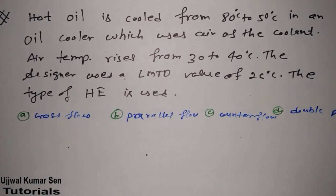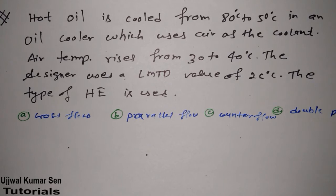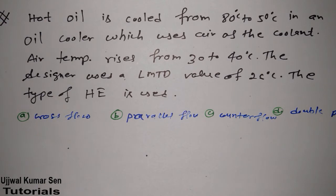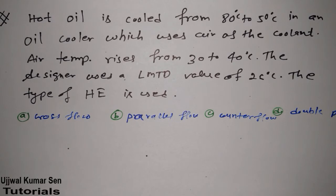We have to find out which type of heat exchanger is being used. You probably came to watch this video because it's about cross flow, but we don't have any formula to find out LMTD for cross flow in our course. We only know how to find LMTD for parallel flow and counter flow. The key insight is that the LMTD for cross flow lies between the values for parallel flow and counter flow.